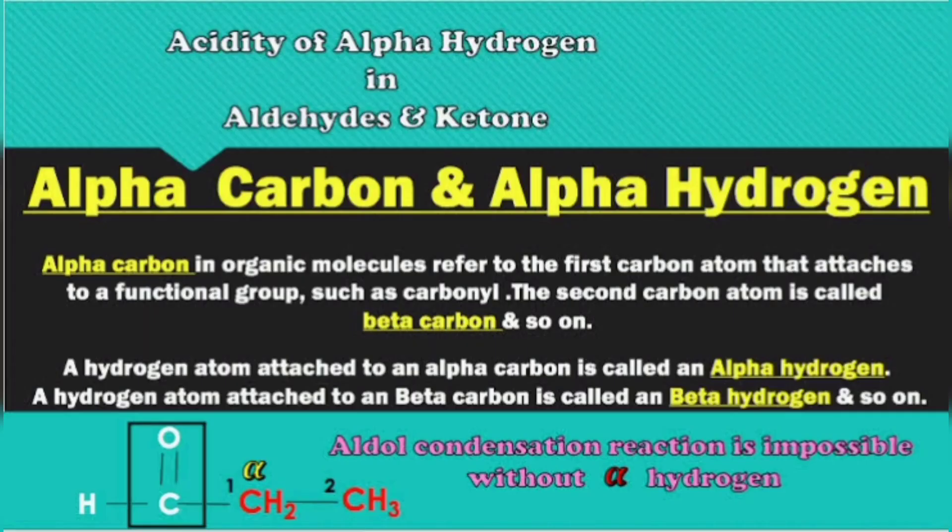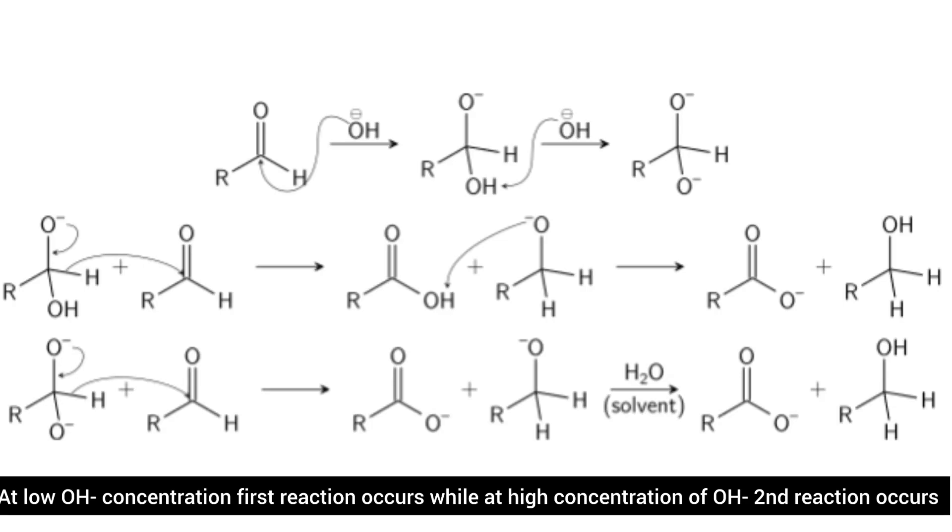The aldehyde, having no alpha hydrogen, gives this reaction. The reaction involves a nucleophilic acyl substitution on an aldehyde with a leaving group concurrently attacking another aldehyde. In the second step, first, hydroxide attacks a carbonyl. The resulting tetrahedral intermediate then collapses, reforming the carbonyl and transferring hydride to attack another carbonyl.